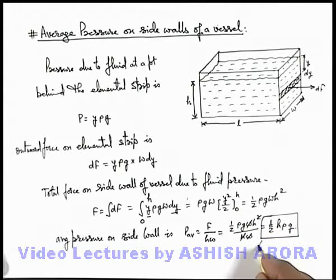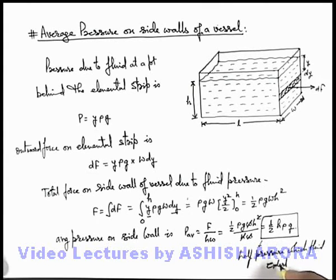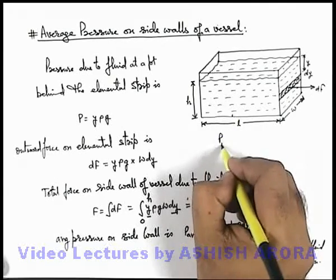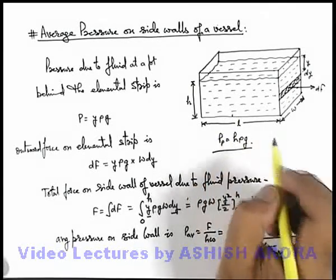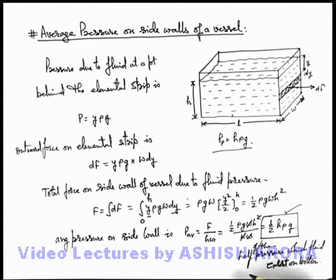This is quite an important relation to keep in mind. The average pressure on the side wall equals half the pressure which the fluid exerts on the bottom. As we know, the pressure at the bottom is h·ρ·g. So the average pressure on the side wall is simply half of the pressure the fluid exerts at the bottom of the container. Keep this result in mind as it is used directly in many applications.